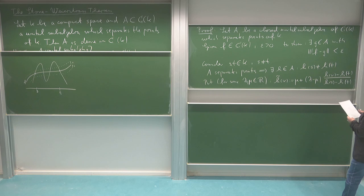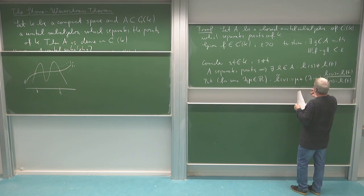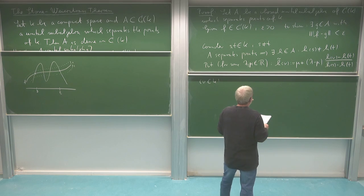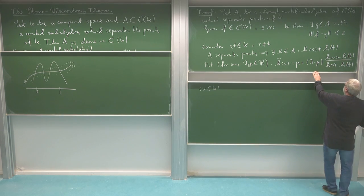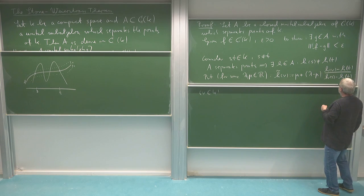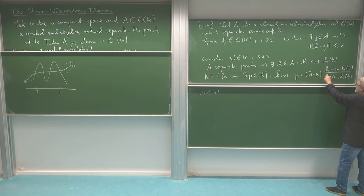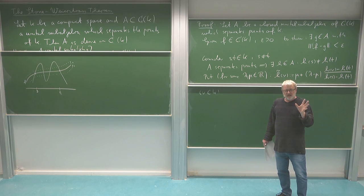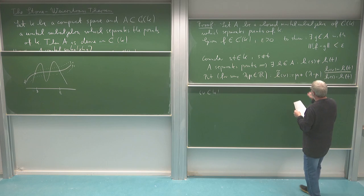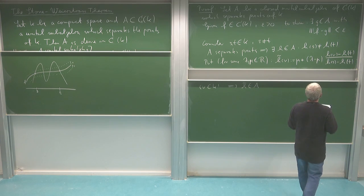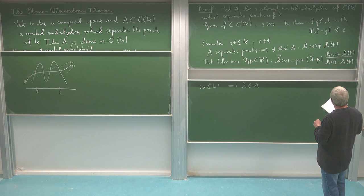This h̃ is also in A because I get it from h — here h(v) is the function, the rest are just numbers from h evaluated at fixed points. So here's h, rescaled by a scalar. Then I'm adding constant functions: mu and the other term are constant functions. Since A is a unital subalgebra, multiplying by scalars and adding constant functions stays within A. So this h̃ is also in A.